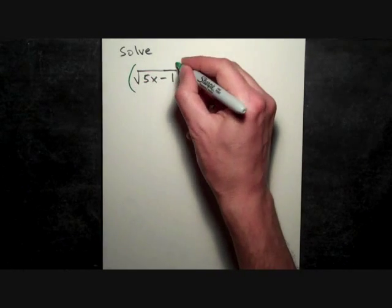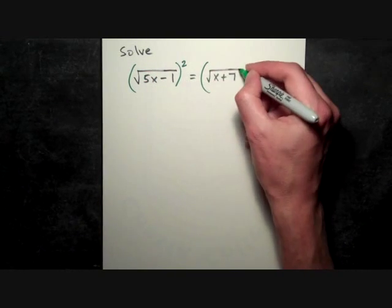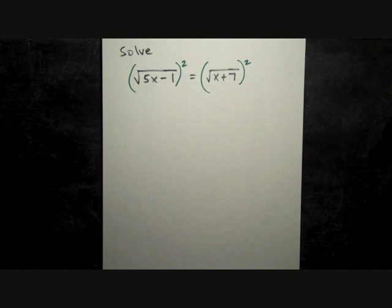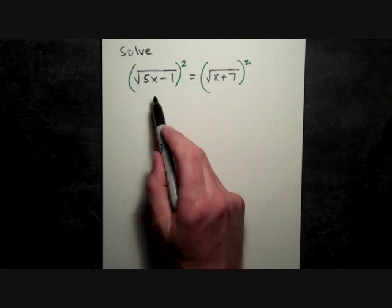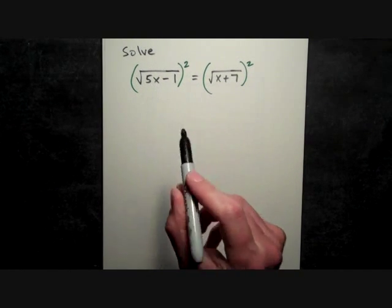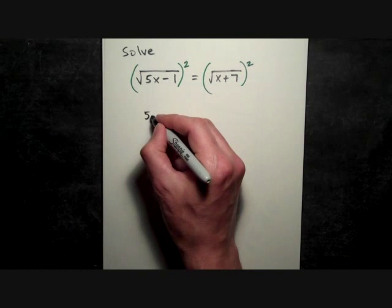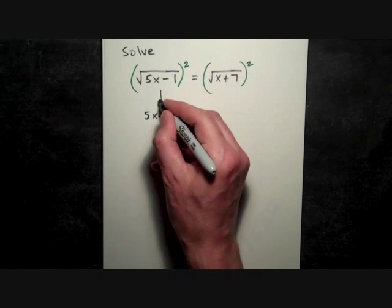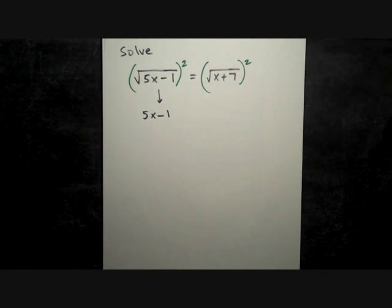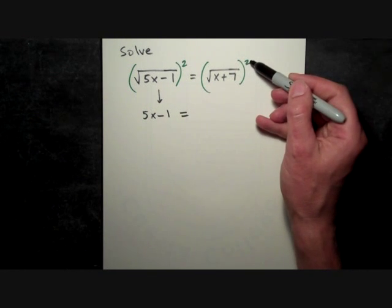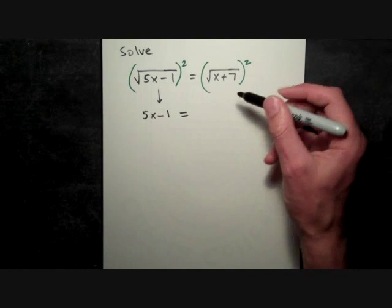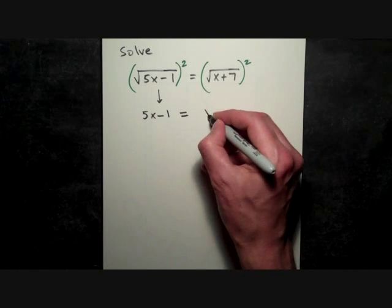And now when we square both sides, the square will eliminate the square root on the left, and so you're just left with whatever expression was under the radical. In this case, we get 5x - 1 for the left side. And on the right side, same thing: square eliminates the square root, so we're just left with the x + 7 from the inside.